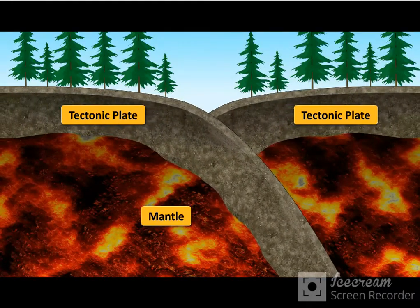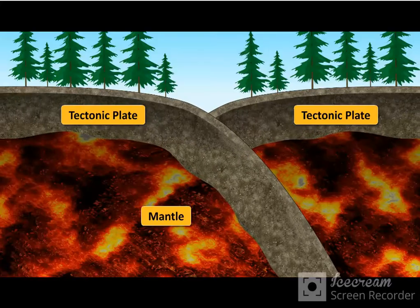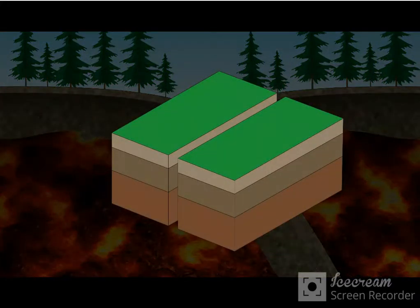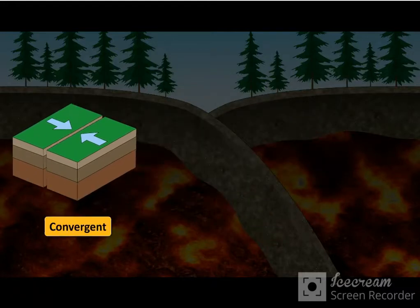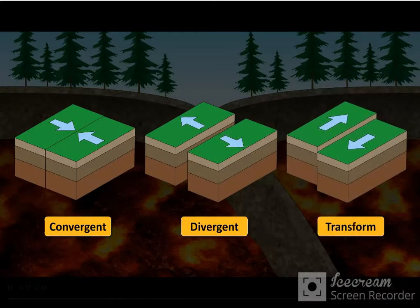Most of this movement occurs along the plate boundaries. Based on the nature of the movement, boundaries can be of three types: convergent, divergent, or transform.